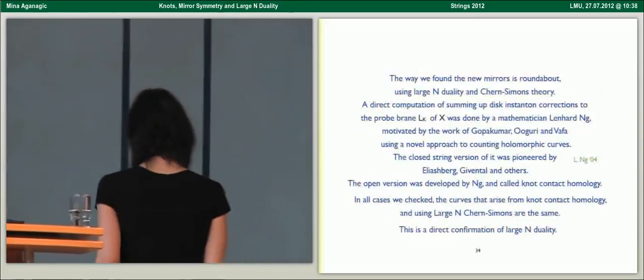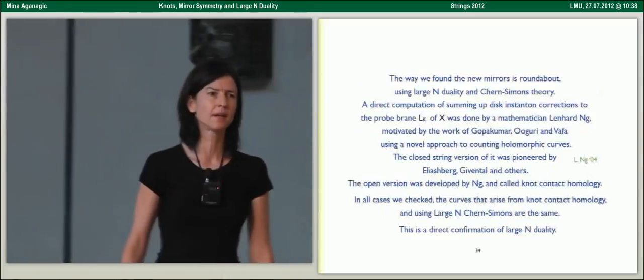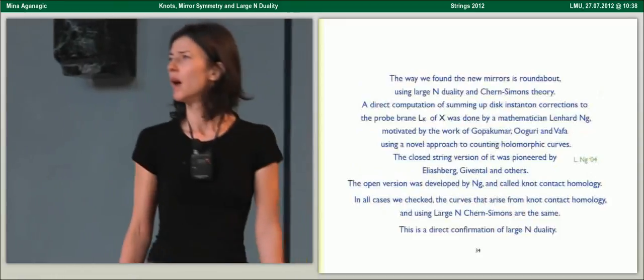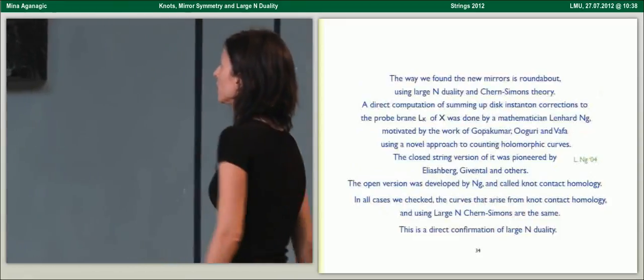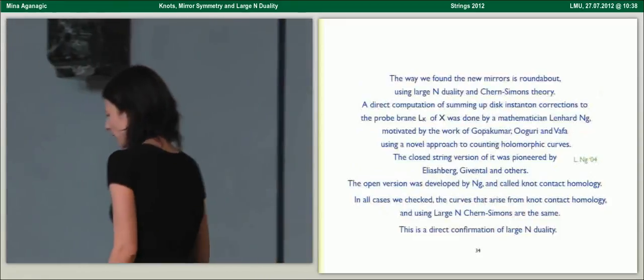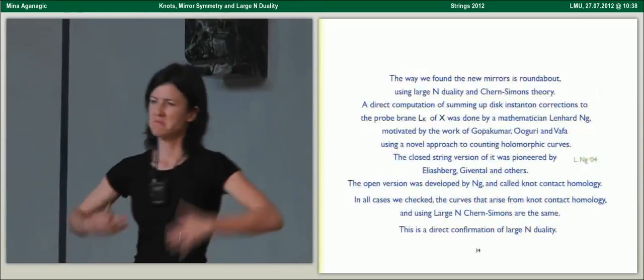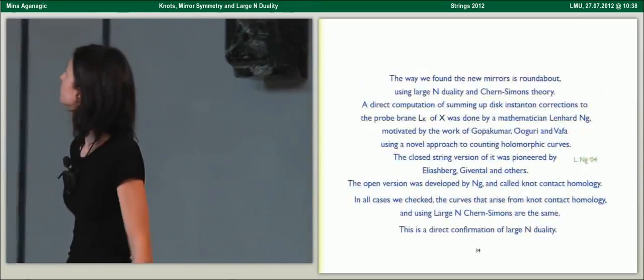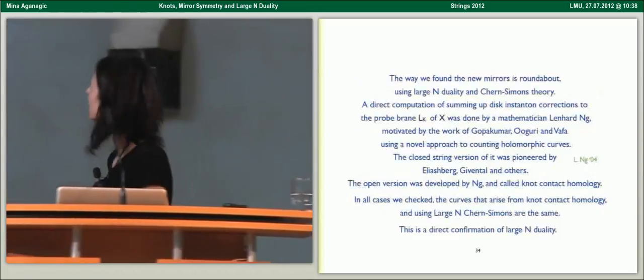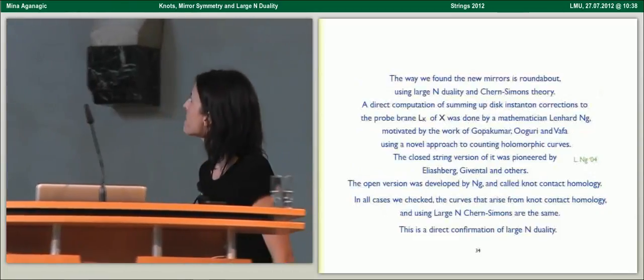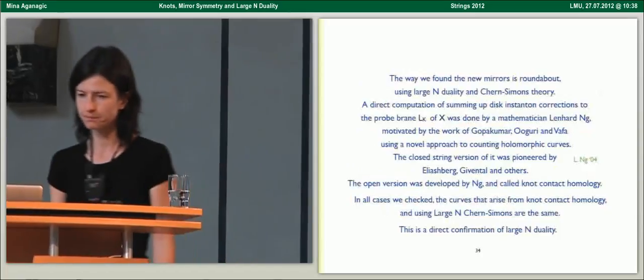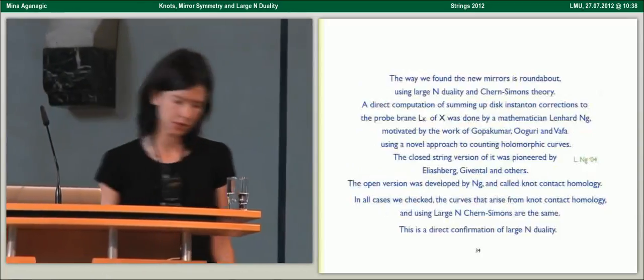The way we found these new mirrors is very roundabout. It went through large N dualities which aided us in solving some technical problems. In principle, you could ask, now that you've found these Lagrangians, let me just do a direct computation of summing up disk instanton corrections to the moduli space of the probe brane.